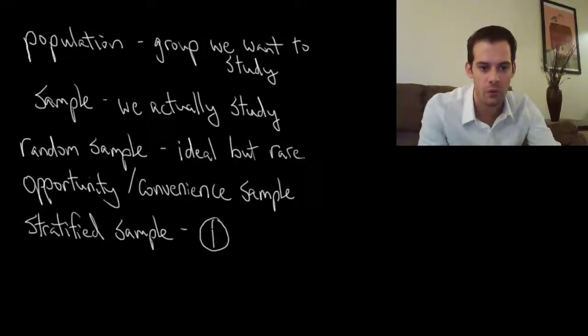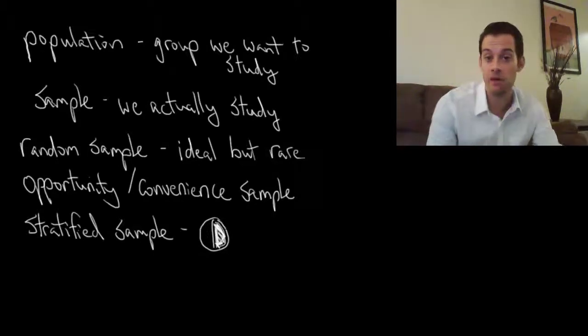I might say okay I think maybe gender is important for the thing I'm studying, it might be relevant. So if in the population there's about half females and half males, then I want to make sure my sample also has that. Now that's not random, that wouldn't be guaranteed to happen by random chance, but I might think it's important and so I choose to stratify my sample that way.